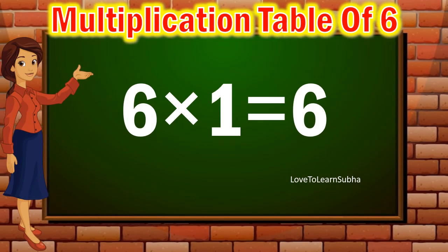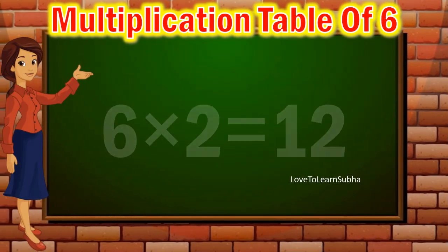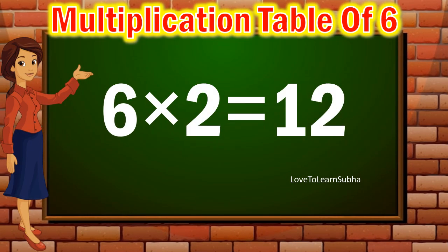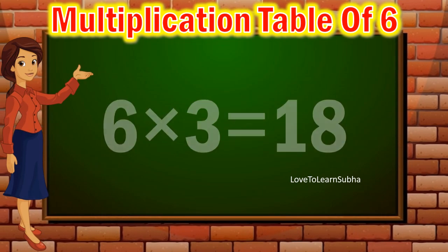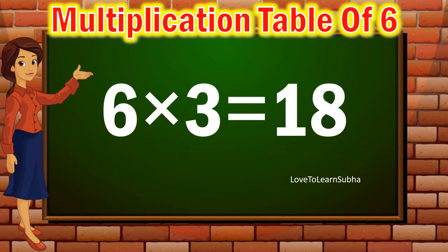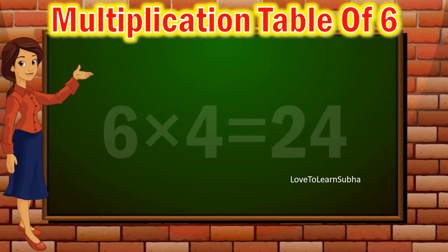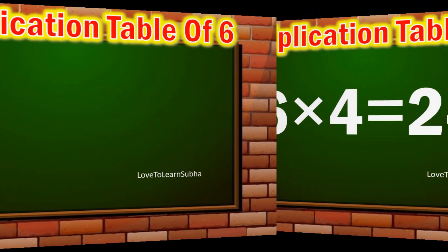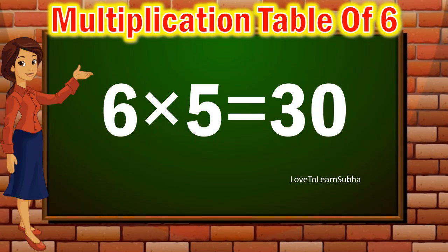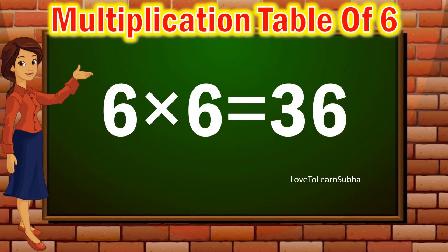6 ones are 6. 6 twos are 12. 6 threes are 18. 6 fours are 24. 6 fives are 13. 6 sixes are 36.